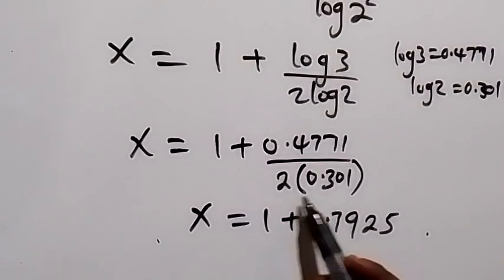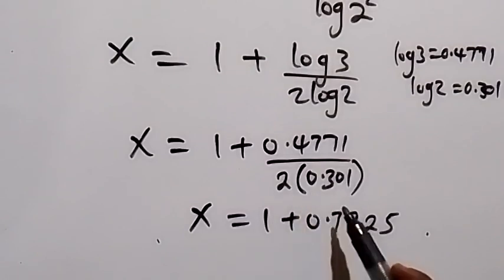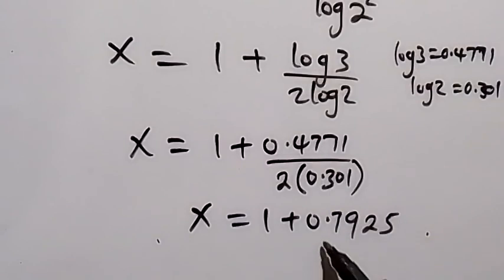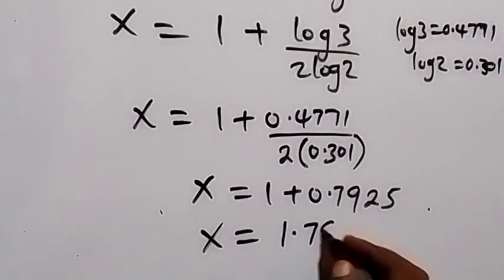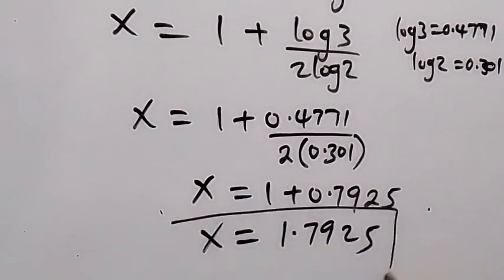And we divide, so we have 0.7925. So when we add this together we have x equals to 1.7925, and here we get the approximate value of x.